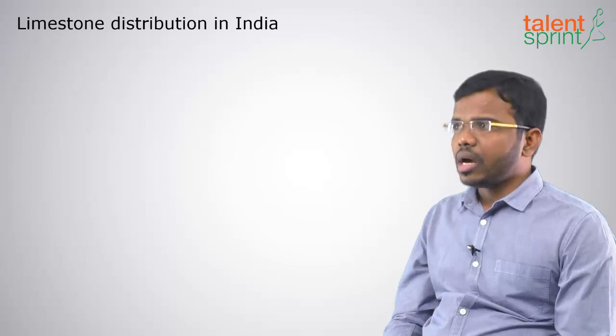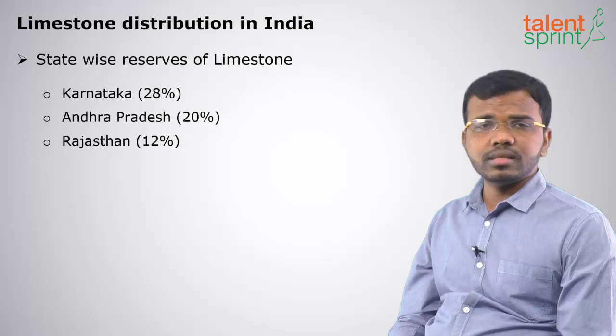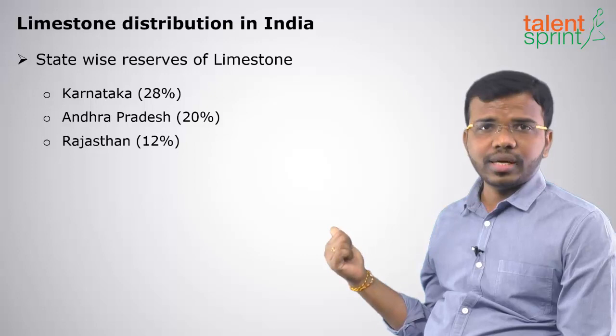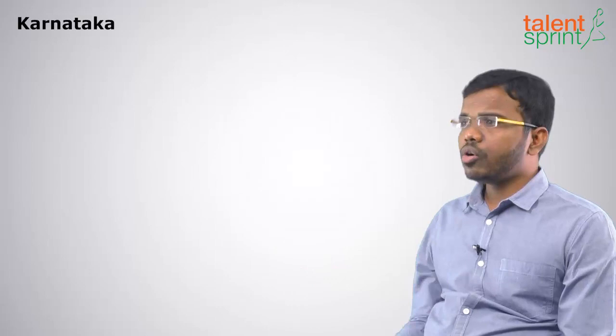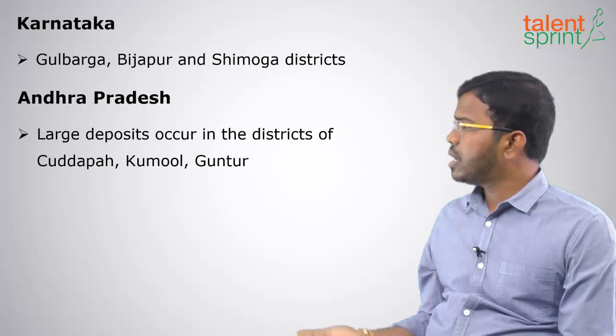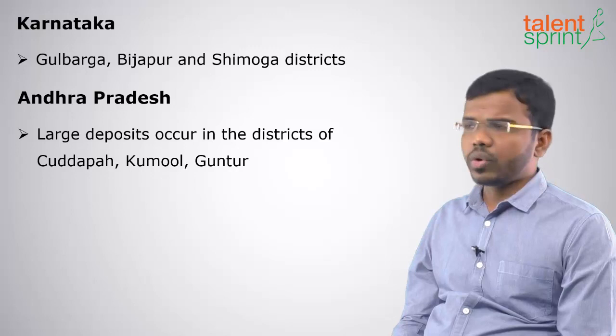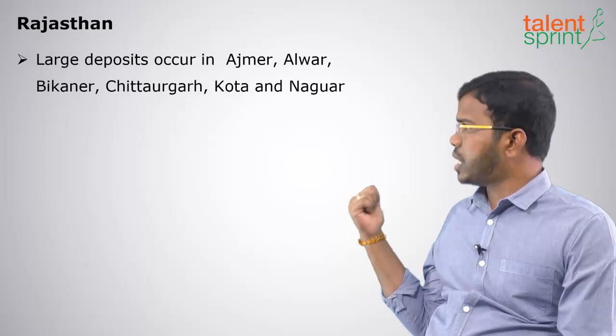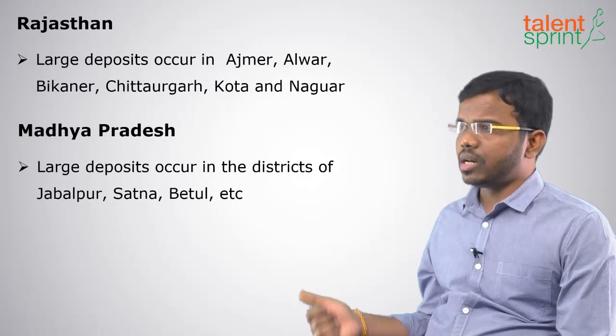Moving on to limestone distribution in India: the highest reserves are found in Karnataka with 28%, followed by Andhra Pradesh, then Rajasthan in third position. In Karnataka, limestone is found in Gulbarga, Bijapur, and Shimoga districts. In Andhra Pradesh, it is found in Kadapa, Kurnool, and Guntur districts. In Rajasthan, large deposits occur in Ajmer, Alwar, Bikaner, Chittorgarh, Kota, and Nagaur districts.